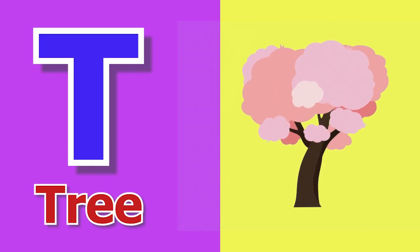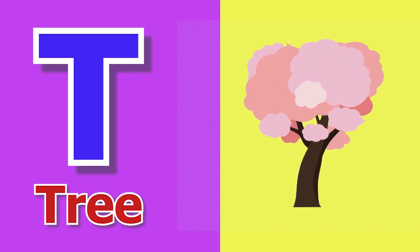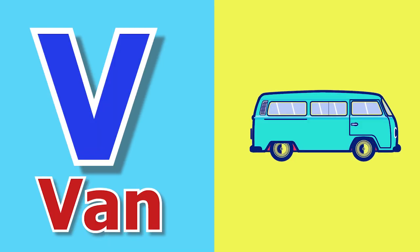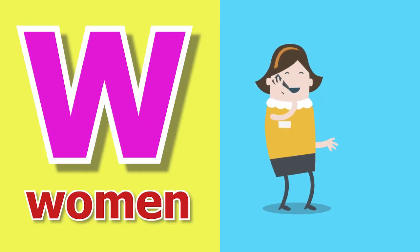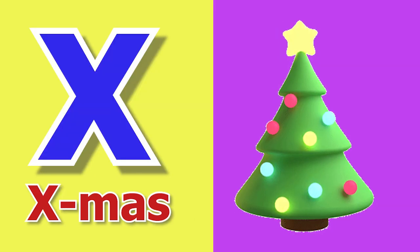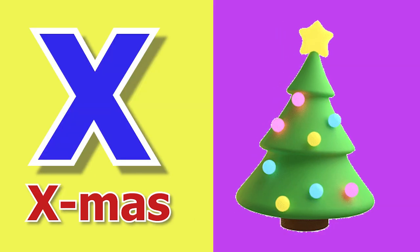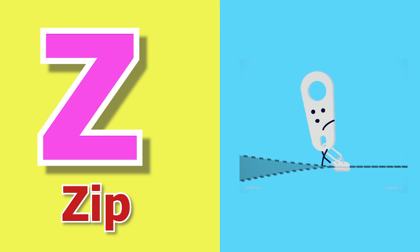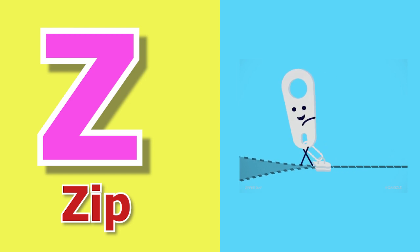T for Tree, U for Uncle, V for Wen, W for Woman, X for Xmas, Y for Yo-Yo, Z for Zip.